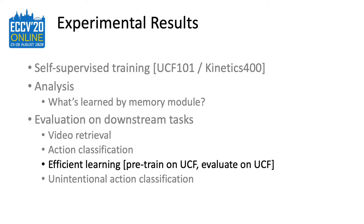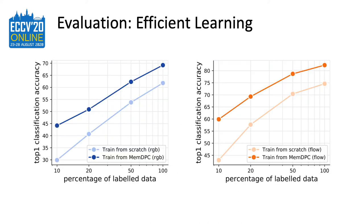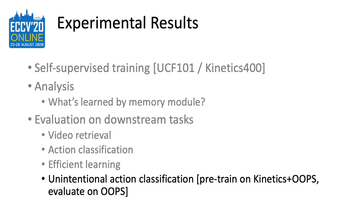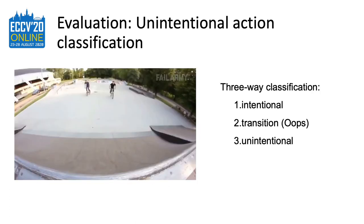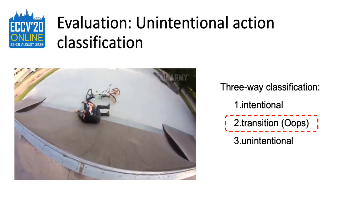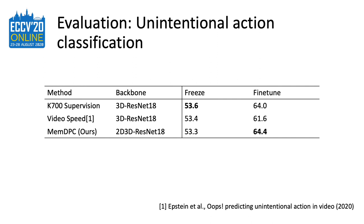For efficient learning, our model is pre-trained on UCF without any labels and evaluated on UCF. We fine-tune the network for action classification in a supervised way but with a limited number of labeled data, comparing to a representation initialized with random weights. It shows that when the model is pre-trained on UCF101 with self-supervised learning, it only needs less than half of the labeled data to get comparable results. Lastly, we evaluate our representation on the unintentional action classification task on the OOPS dataset. Our model is pre-trained on Kinetics400 and OOPS without any labels. The OOPS dataset defines three types of actions: intentional, transitional, and unintentional. On this task, we outperform a very strong baseline of supervised pre-training on Kinetics700 under the fine-tuning protocol.